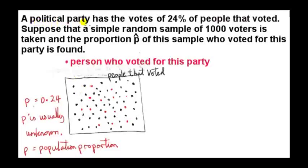After an election, a political party has the votes of 24% of the people that voted. I'm representing all those people by this set. Each dot is a person who voted in this election.